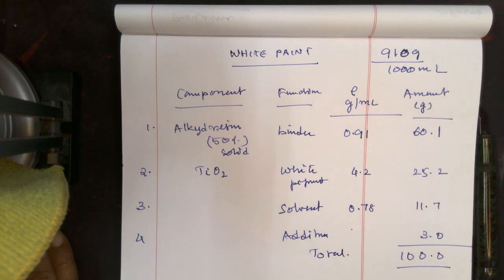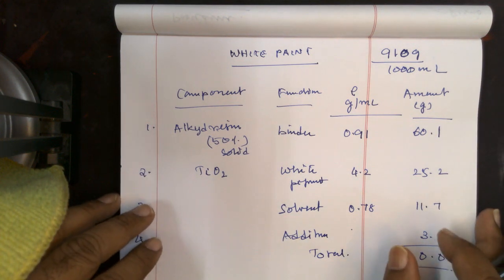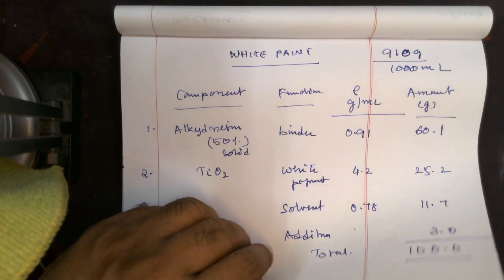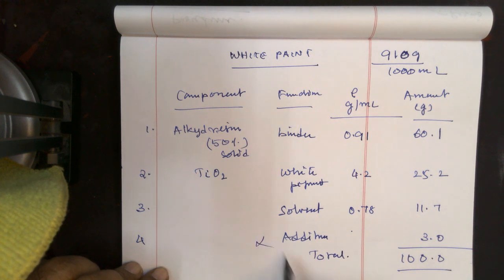Now for the calculation purpose of pigment volume concentration and pigment binder, let us ignore the additives because it occupies the very least portion.